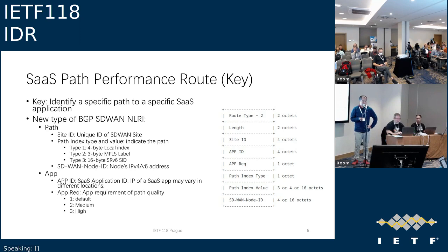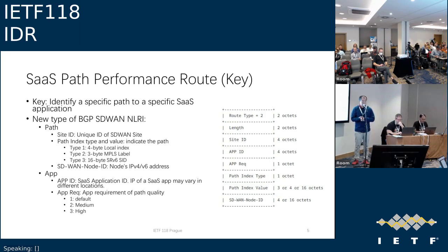To advertise the SaaS path performance metric, the key identifies both the path and the SaaS application. The path is identified by site ID and the interface from which traffic leaves — identified by local index, MPLS label, or SRv6 depending on the data plane — plus an SD-WAN node ID since there may be multiple SD-WAN nodes per site. The application part uses an application ID, because the IP of the SaaS application may vary between different sites. We designed a new route type for BGP SD-WAN.